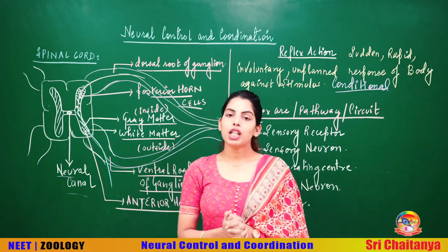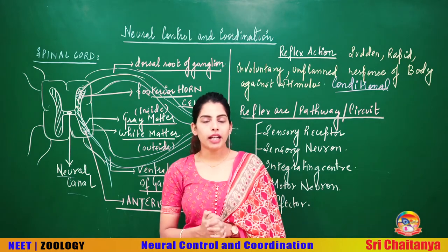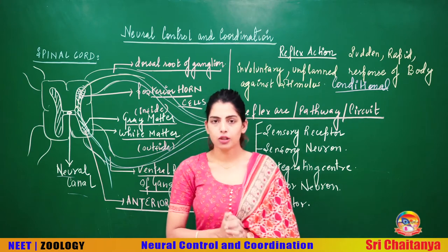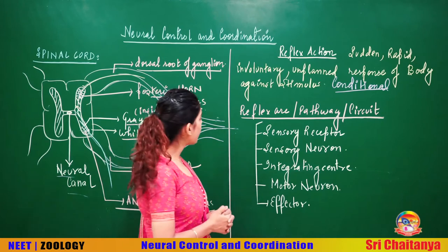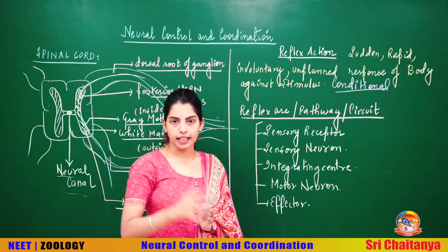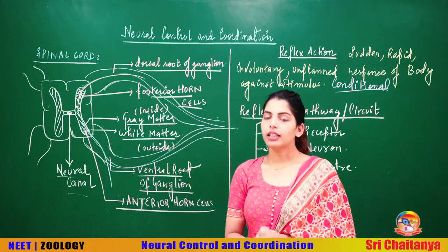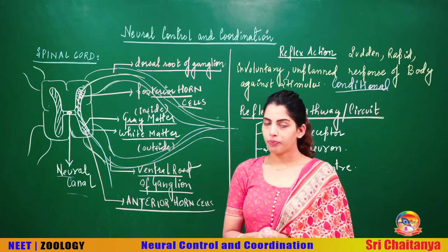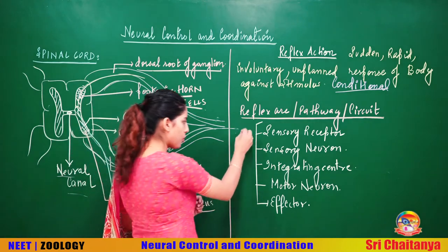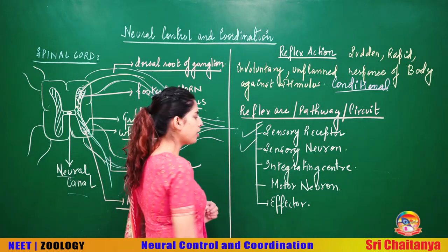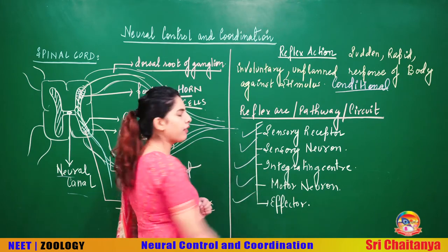Reflex action always follows a particular path to perform its action. That entire pathway — the entire circuit, the entire arc — is called the reflex arc or reflex pathway. We have to see what are the different components of a reflex arc. Looking at the components: it has a sensory receptor, a sensory neuron, an integrating center, a motor neuron, and an effector.